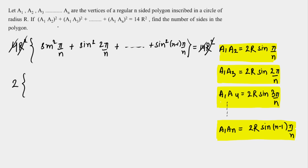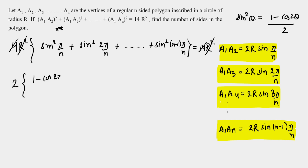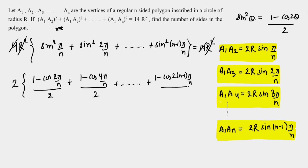This is a very important step. We know summation formulas for sine and cosine series, but this series involves sin squared. We convert using the identity: sin²θ = (1 − cos 2θ)/2. The whole series becomes: (1 − cos(2π/n))/2 + (1 − cos(4π/n))/2 + ... + (1 − cos(2(n−1)π/n))/2, which equals 7.